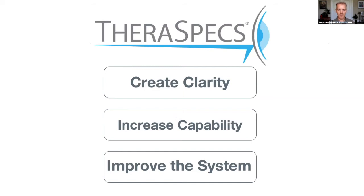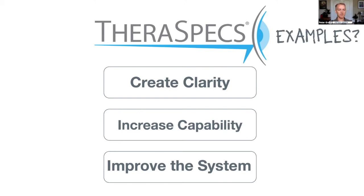Going back to the conversation with the TheraSpecs CEO around these three ideas — create clarity, increase capability, improve the system — he asked: if you were to give a presentation around this, what companies would you use as amazing examples? Who's amazing at creating clarity? The first company that popped into my mind was Tesla. If you look at Elon Musk's writing, in 2006 when Tesla had just announced the roadster, they started that announcement by sharing the mission of Tesla Motors — an example of creating clarity. Musk said: 'The mission of Tesla Motors is to accelerate the mass market adoption of sustainable transportation.'